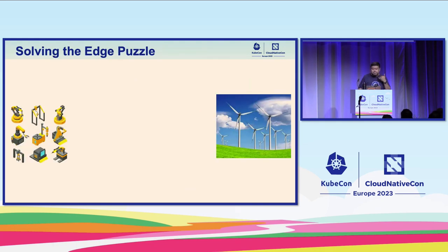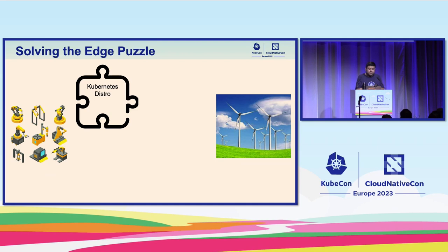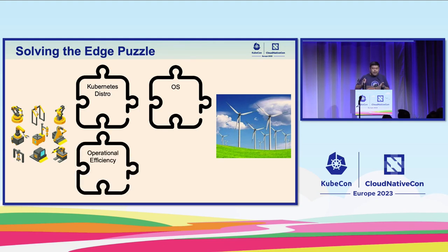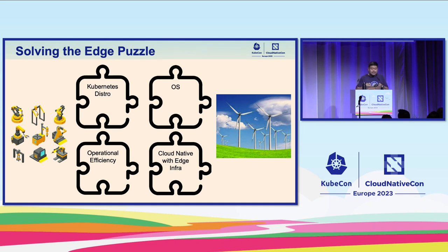Now we have this edge puzzle — how do we solve it? We need to look at the Kubernetes distro for resource-constrained environments. We should also look at the OS for resource-constrained environments — how do we have a minimal OS? Everything besides the application is overhead, including the operating system. How do we gain operational efficiency and remove the need for standing on-site technicians? And how do we support existing edge infrastructure with CloudNative?